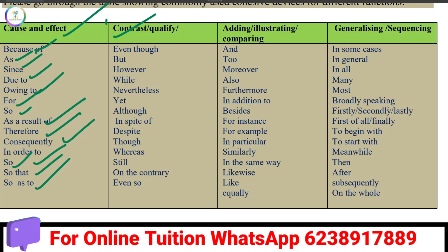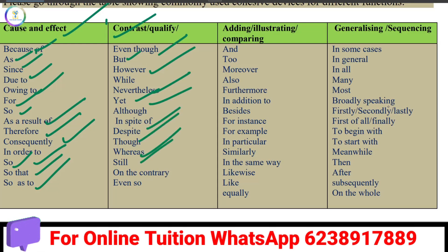Contrast. Cohesive devices for contrast include: even though, but, however, nevertheless, while, yet, although, in spite of, despite, though, whereas, still, on the contrary, even so.